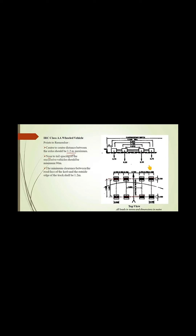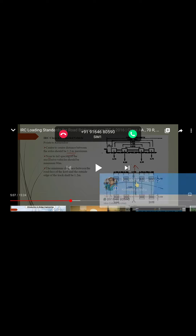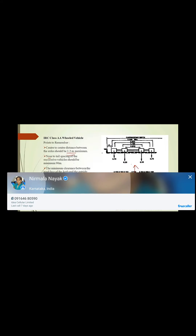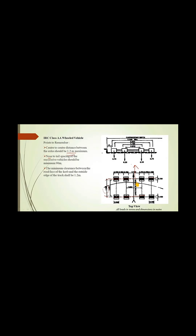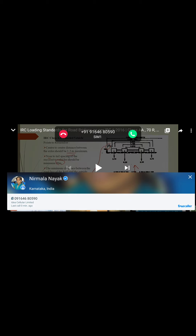The load of 400 kN is carried as four point loads on each side. The center-to-center distance between the axles of the load is 1.2 meters. The nose-to-tail spacing between successive vehicles must again be a minimum of 90 meters — the distance from the tail of one vehicle to the nose of the next vehicle must be maintained at 90 meters.